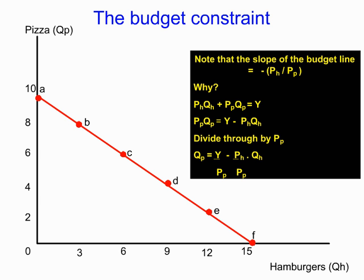How do we know the slope of the budget line equals minus the price of hamburgers over the price of pizzas? The way to understand it is to think about total spending on hamburgers and pizzas being equal to income — forty-five pounds. So: price of hamburgers times quantity of hamburgers (Ph × Qh), plus price of pizzas times quantity of pizzas (Pp × Qp), equals income. Rearranging, total spending on pizza (Pp × Qp) equals income less spending on hamburgers (Ph × Qh).